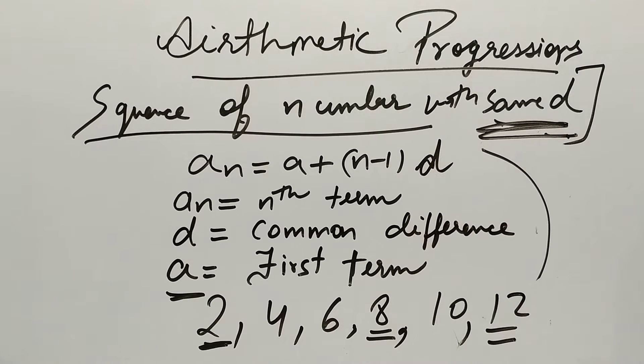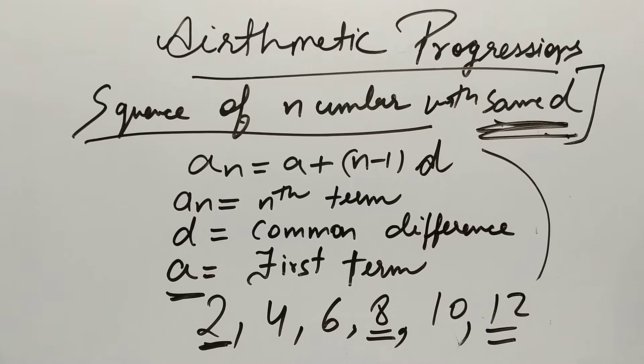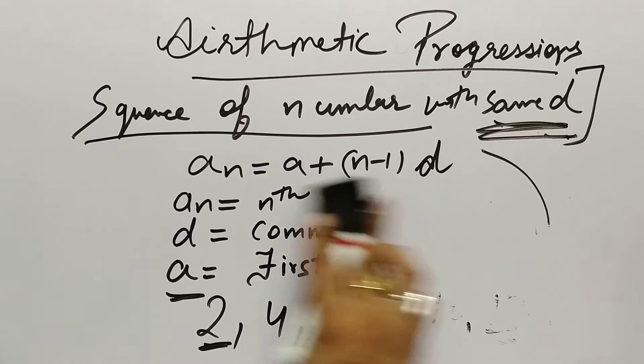So the concept is: aₙ equals a plus (n minus 1) into d, where aₙ is the nth term, d is the common difference, and a is the first term.